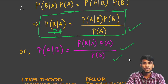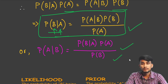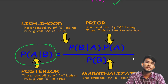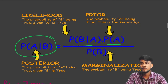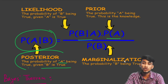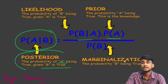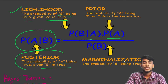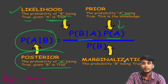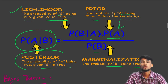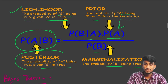Now before going to the statement of Bayes' theorem, we need to know some key terms. In the formula P(A|B) = P(B|A) · P(A) / P(B): P(A|B) is known as the posterior — the probability of A being true given that B is already true. P(B|A) is known as the likelihood — the probability of B being true given that A is true. P(A) is called the prior probability — the existing knowledge of A being true. And P(B) represents marginalization — the probability of B being true.